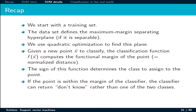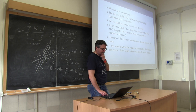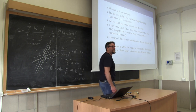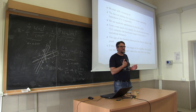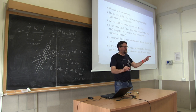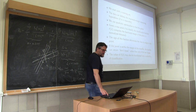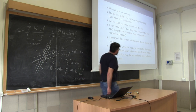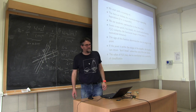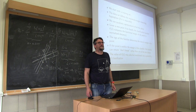It could be that the classification function gives you a point that is within the margin. So what you can do is return 'I don't know.' You can have positive, negative, or don't know. Or, since this is the distance to the hyperplane, you can use it as a probability function.